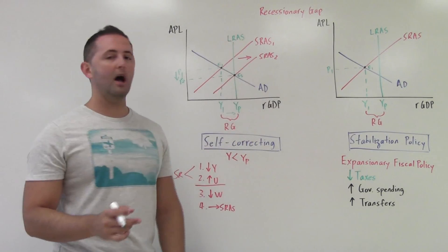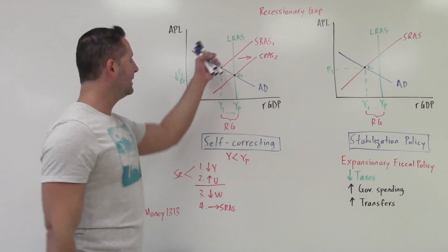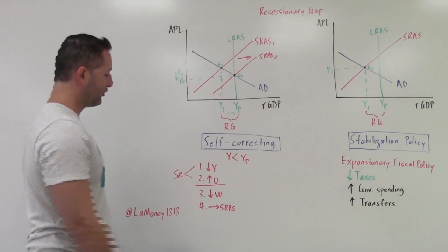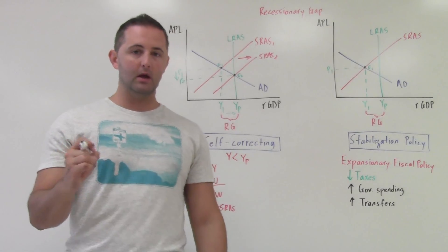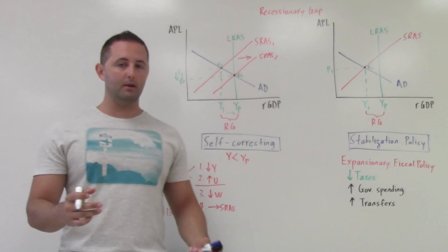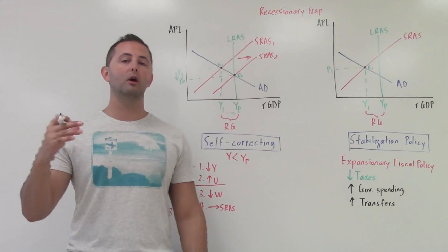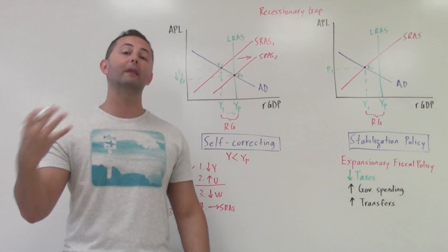And so this is how the economy self-corrected from a recessionary gap. These are your four key steps. We had falling output, which led to rising unemployment. Rising unemployment in the short run, wages didn't change, but in the long run,